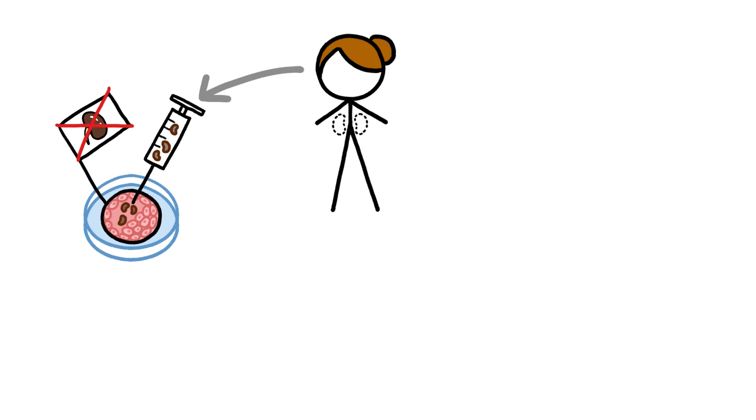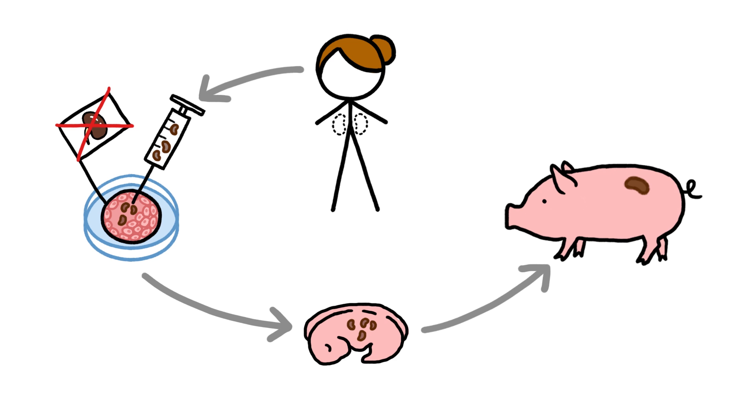First, we engineer a pig embryo that doesn't grow its own kidneys. Then we inject it with stem cells from the person needing a transplant. Then, as the modified pig embryo develops, those human cells grow inside the oincubator into healthy kidneys made from the patient's own cells.